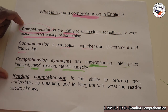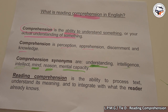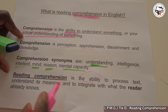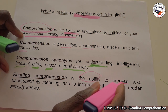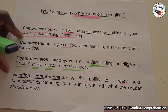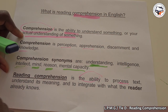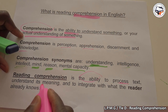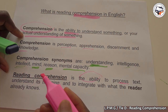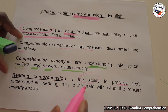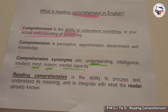Now the question we are going to ask is: what is reading comprehension? Reading comprehension is the ability to process text, to understand its meaning, and to integrate with what the reader already knows. Maybe you have some background about something, and if you read a text, you can understand it.